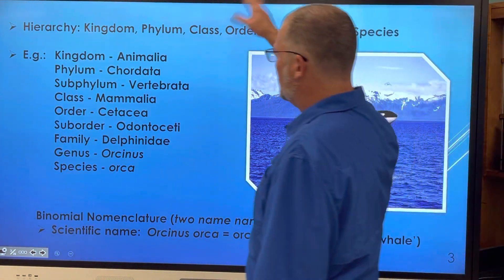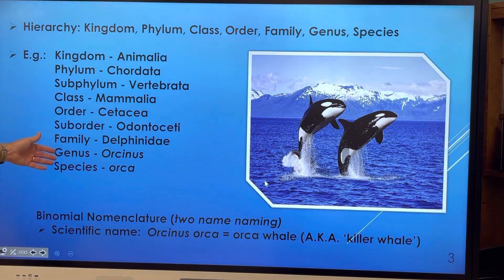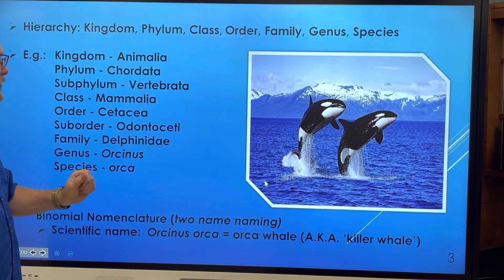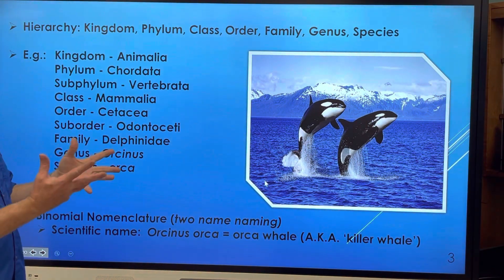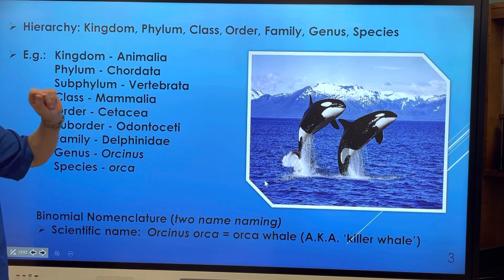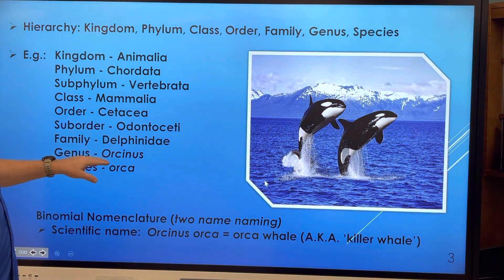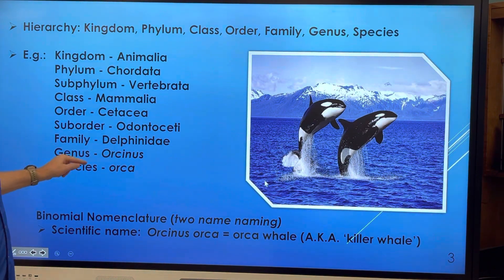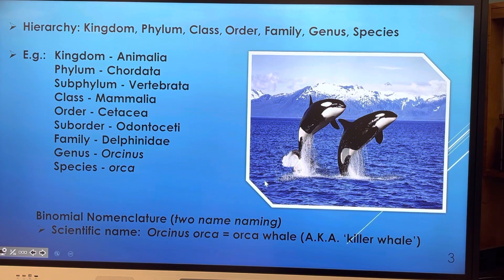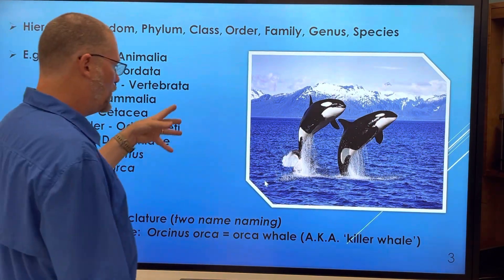Here's the hierarchy again: kingdom, phylum, class, order, family, genus, species. Here's an example using an orca: animalia — that's animals; chordata — they have a spinal nerve cord; vertebrata — they have vertebrae; mammalia — they're mammals; cetacea — they're whales; odontoceti — they're toothed whales; delphinidae; and then orcinus orca, their genus and species name — their binomial nomenclature.